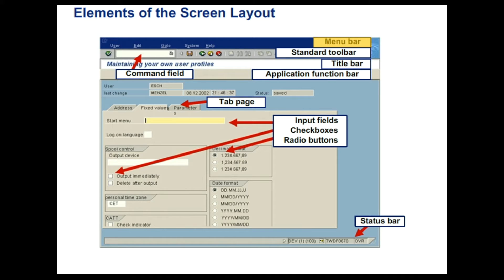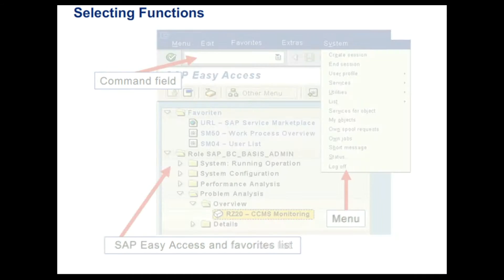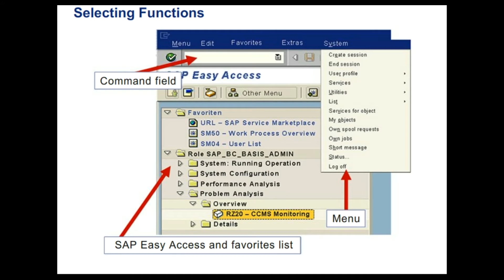Menu bar displays the menus and sub-menus of the application that you are currently working on. You can use any of the following options to execute your required system functions. By using the mouse, you can select the function using the menu tree, the function from the favorites, or the entry from the SAP Easy Access menu. With keyboard, you can select your function with the keys Alt plus the underlined letter of the desired menu entry. You can also select your function by entering the transaction code directly in the command field.